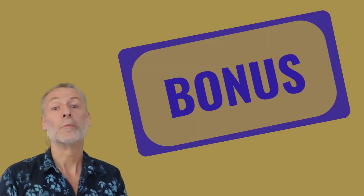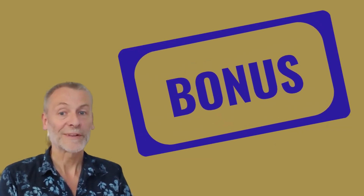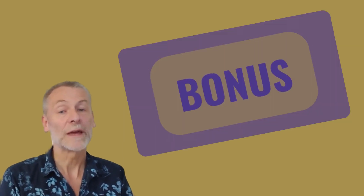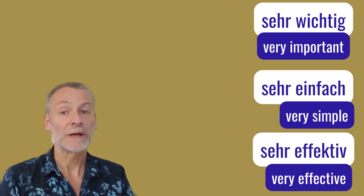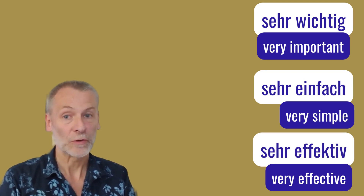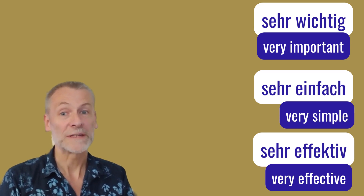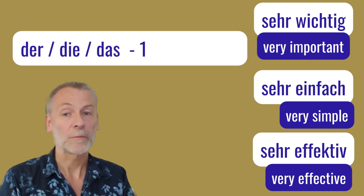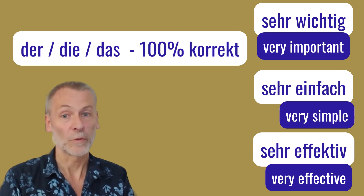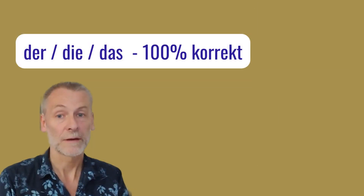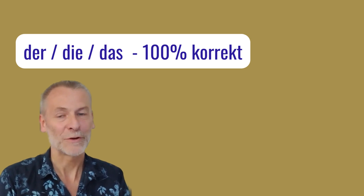So here is good news number two, which is at the same time also the bonus material for today. I'm very excited to talk about it because it is something really very important, very simple, and very effective. I'm talking about a technique you can use in order to get the definite article — der, die, and das — correct all the time. So every single time you are using an article with a noun, you will have it right. How can you do that? Let me show you.